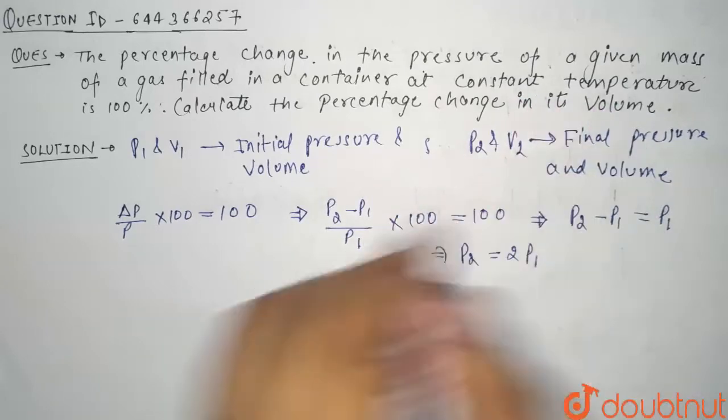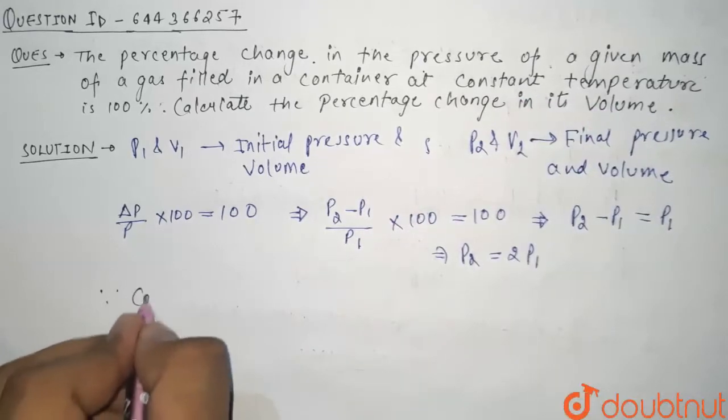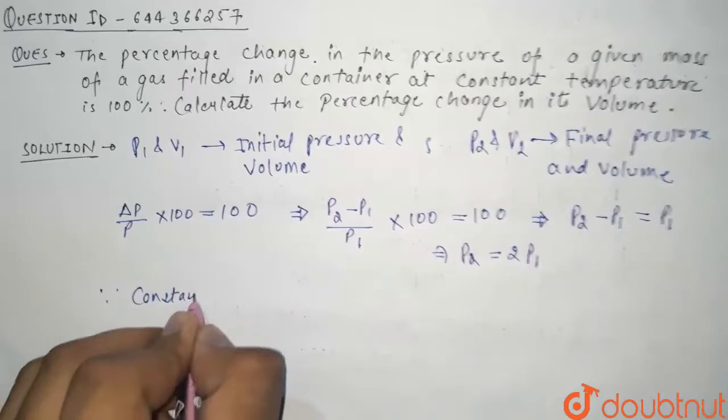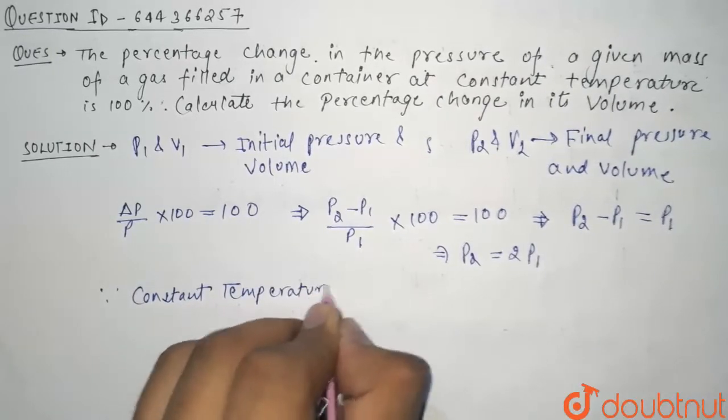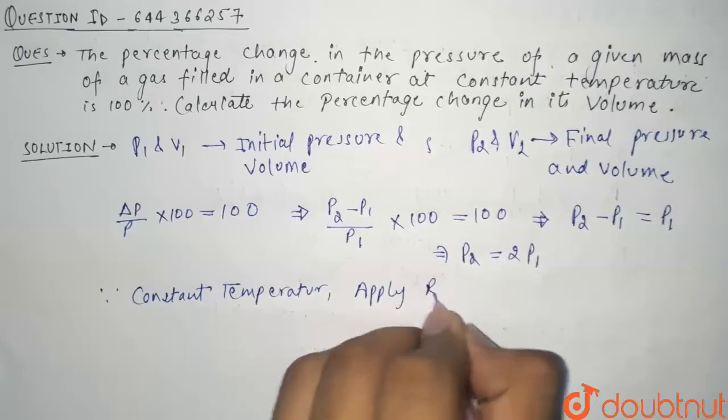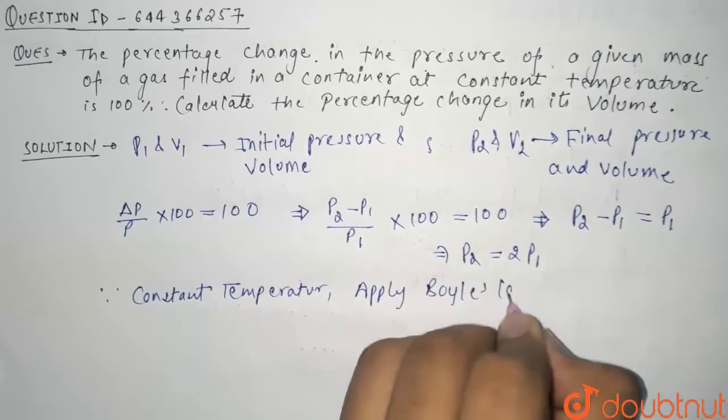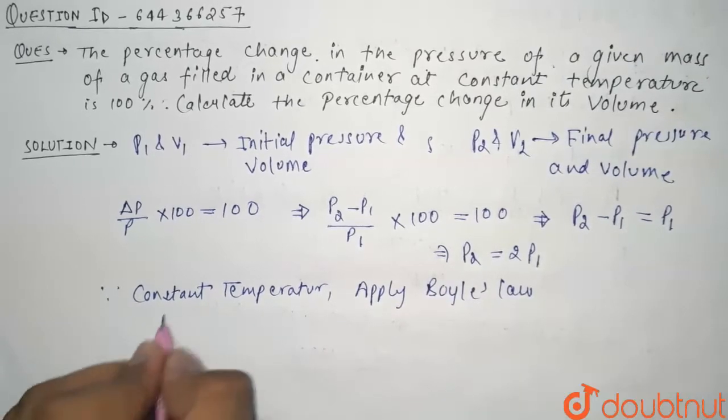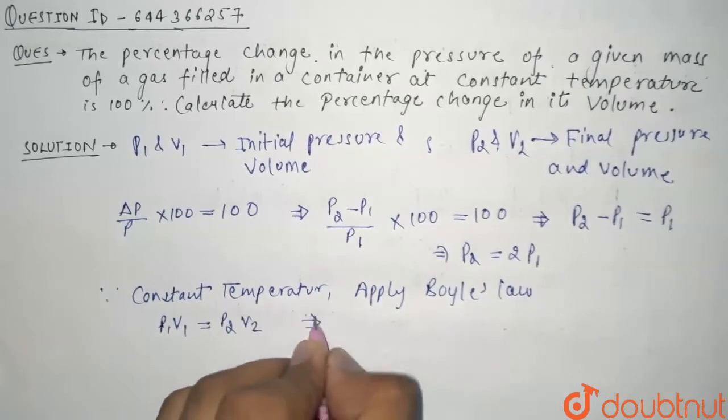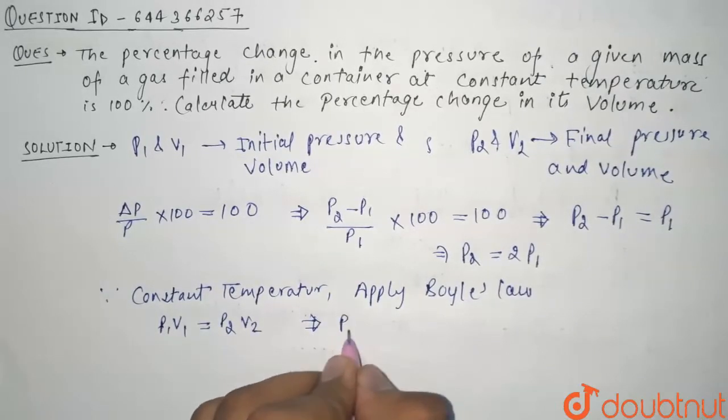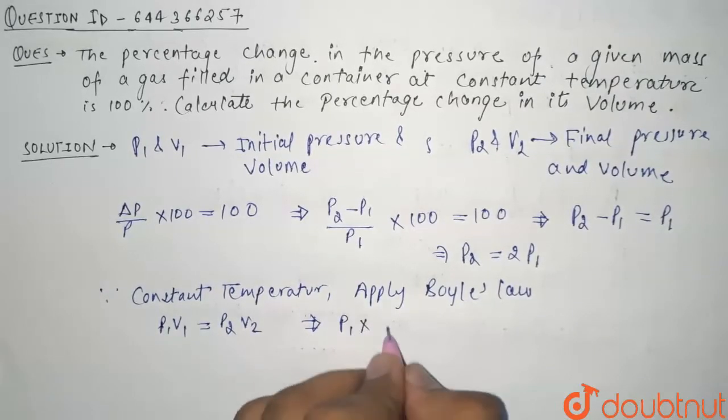Now since we have been given constant temperature, we can apply Boyle's law here. Boyle's law says that P1V1 should be equal to P2V2. Now what is P1? P1 is P1 here. V1 is V1.